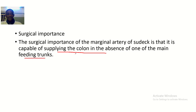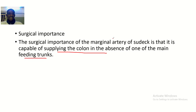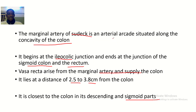It acts like a collateral artery. The surgical importance of the Marginal Artery of Sudeck is that it is capable of supplying the colon in the absence of one of the main feeding trunks. So if the blood supply to the colon is occluded somewhere, the Marginal Artery of Sudeck can come in to replace that blood supply.